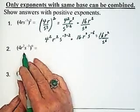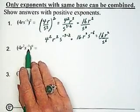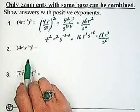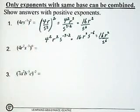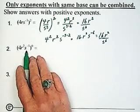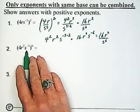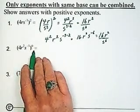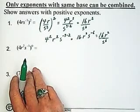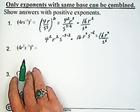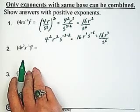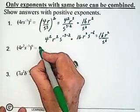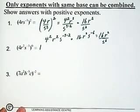This next question: we have 4r squared, s to the minus 3, the same thing, now raised to the power of 0. If you remember from the first video we did on exponents, anything raised to the power of 0 is 1. It doesn't matter how complicated looking it is — it's 1. So in this case, the answer here is 1.